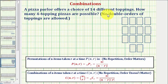A pizza parlor offers a choice of 14 different toppings. How many four topping pizzas are possible? No double orders of toppings are allowed.